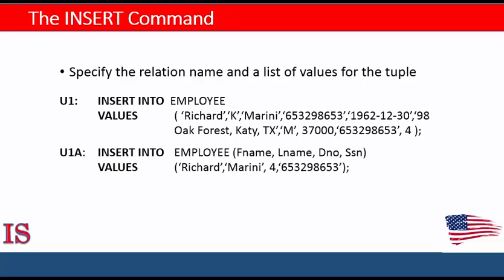A second form of the Insert statement allows the user to specify explicit attribute names that correspond to the values provided by the Insert command. This is useful if a relation has many attributes, but only a few of those attributes are assigned values in a new tuple. However, the values must include all attributes that are specified as not null and have no default value. Attributes that allow a null value or have default values can be left out. In this second example, we insert into Employee by including the name of the attributes and then the corresponding values.